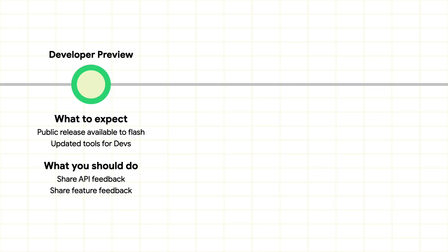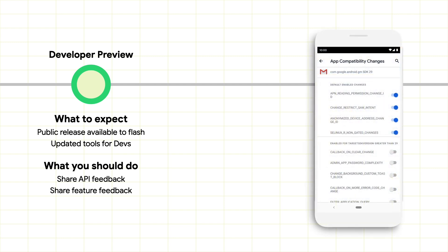Let's take a step back and look at the Android release schedule over the course of the year. Developer previews is where we begin, and typically runs through the spring. It's the first public release we do, and is tailored specifically so app developers can kick the tires and file feedback. It's also a good time to test API behaviors, including those gated behind target SDK. You can test this easily using the App Impacting Changes screen. Check out our other videos for more information on this.